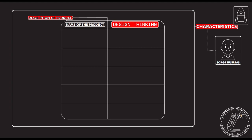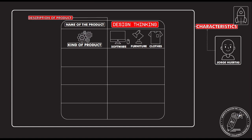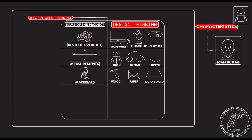When you buy a product and look at the label, there is a data sheet with the technical specifications of the product. The first thing you will always see is the name of the product, then what kind of product it is — whether it is software, furniture, clothes, or food. Then you have the measurements, which are very important: height, breadth, depth. Materials — what is it made of? And there will be a description, especially if it is food, with a very specific description of all the components and the percentage of each substance.